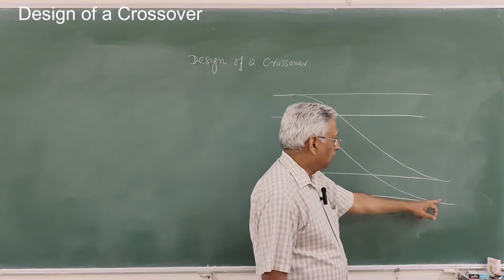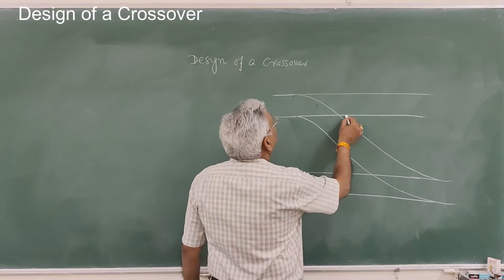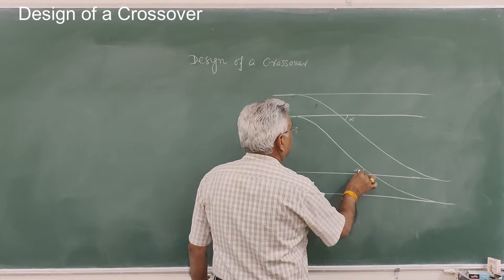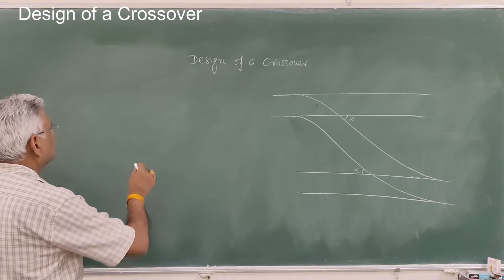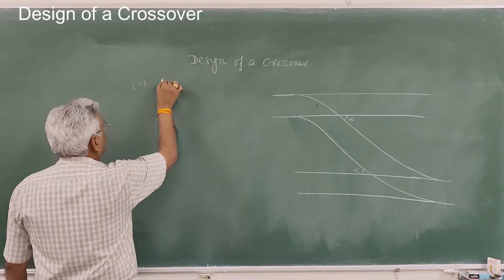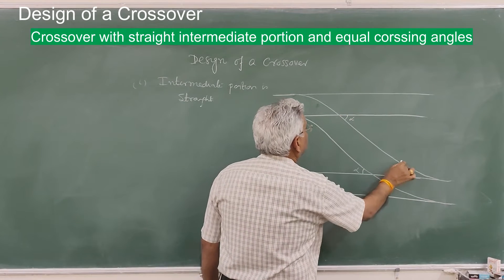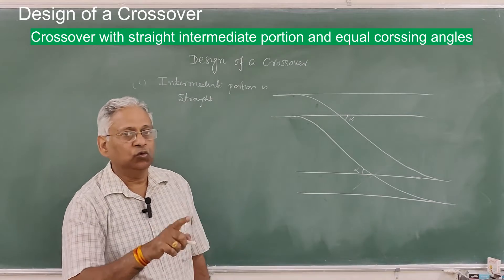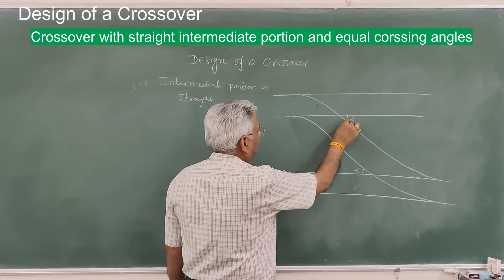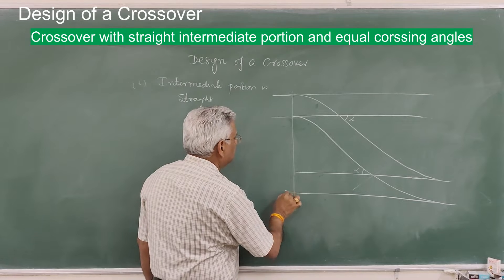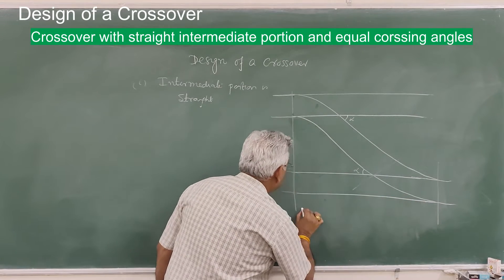A crossover basically consists of two turnouts — one here and another here — with an intermediate portion in between. The angle alpha may be the same or different depending on the number of the turnout. There are three types of designs. The first is when the intermediate portion is straight between the two theoretical noses of crossings. The design essentially means determining the overall length of the crossover from one tangent point to another, which we call L.